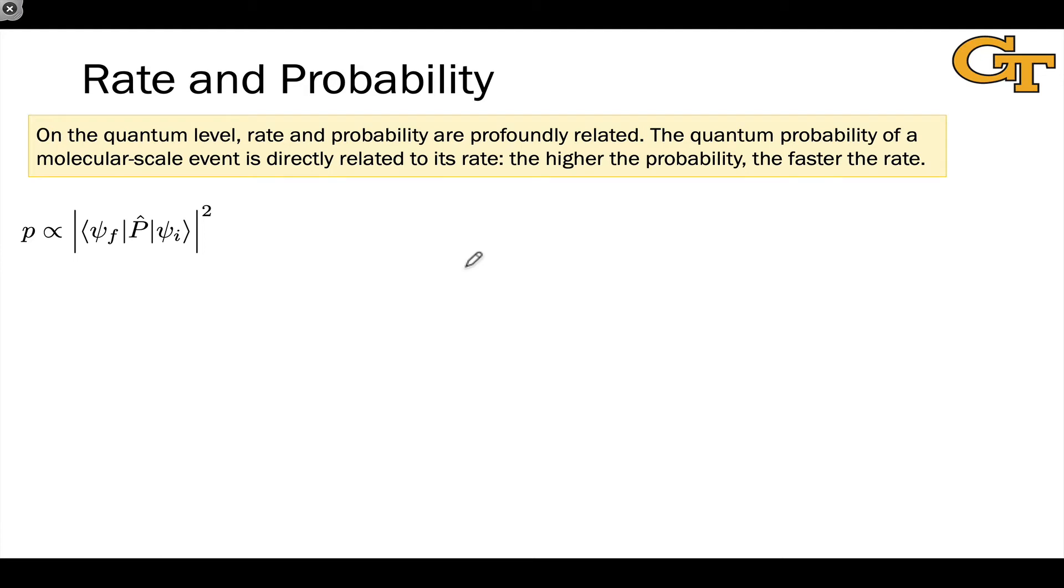We just talked about the analogy of the runner versus the other possibilities and the way that rate and probability are profoundly related in that context. On the quantum level for molecules, the same holds true. Rate and probability are profoundly related.